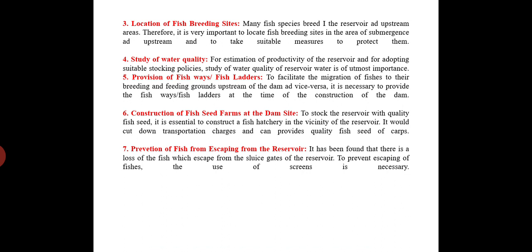Location of fish breeding sites is also an important aspect of pre-impoundment management. Study of water quality of the reservoir water is of great importance for estimating productivity and adopting suitable stocking policies. To facilitate migration of fishes to their breeding and feeding grounds upstream of the dam and vice versa, it is necessary to provide fish ways or fish ladders at the time of construction of the dam.